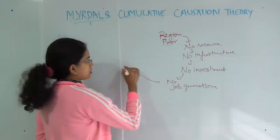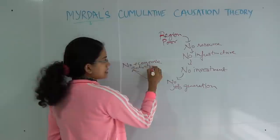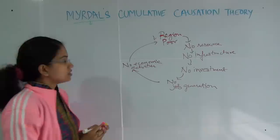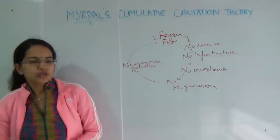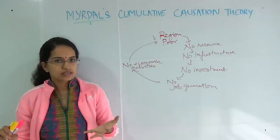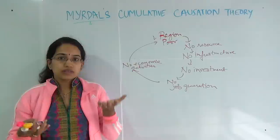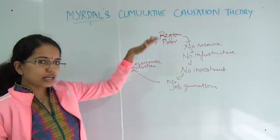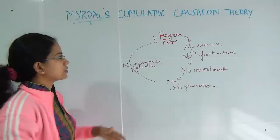Since there is no job generation in the region, there would be no economic activities. And since there are no economic activities, the region will further go poorer and poorer. So that is what is explained by Myrdal under the cumulative causation theory. He basically wants to say that the region which is naturally bestowed with resources grows at a larger pace. There are market inequalities that always exist, and they help the developed regions to grow further, while those regions which are not developed go further down and become poorer and poorer.